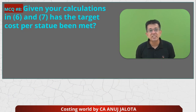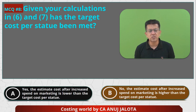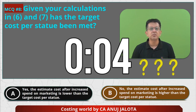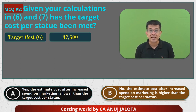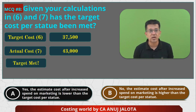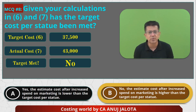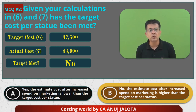MCQ 8: Given calculations in parts 6 and 7 — target cost in part 6 was 37,500 but actual estimated cost in part 7 was 43,000. Has the target cost per statue been met? No, the target has not been met. The estimated cost after increased marketing spend is higher than the target cost. Answer B is correct.